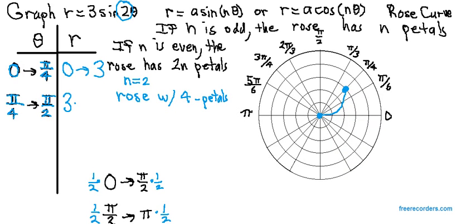And to get the rest of the petal, we're going to plug in pi over 2 for theta. 2 times pi over 2 is pi. Sine of pi is 0. 3 times 0 is 0. And since r is 0, the graph now comes back to the pole.